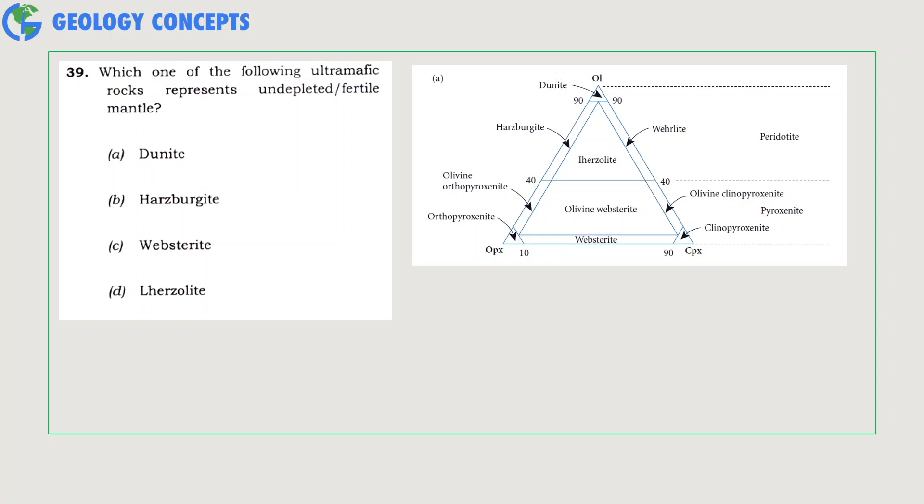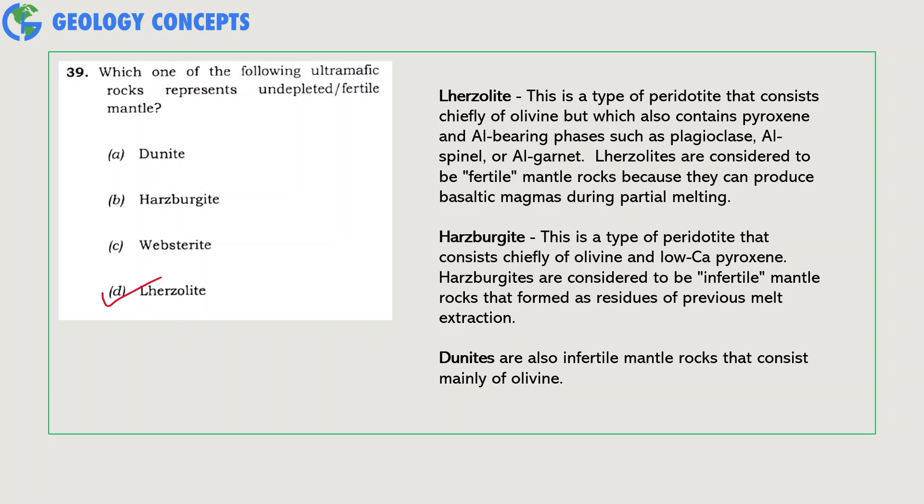Harzburgites are considered to be infertile mantle rocks that formed as residues of previous melt extraction. Dunite are also infertile mantle rock consisting mainly of olivine only. In websterite, the olivine composition is negligible to give rise to basaltic melt. So lherzolite is the most suitable candidate which can undergo partial melting to produce basaltic melt. Therefore, it is also often referred to as undepleted or fertile mantle. Hence, option D lherzolite will be the correct answer.